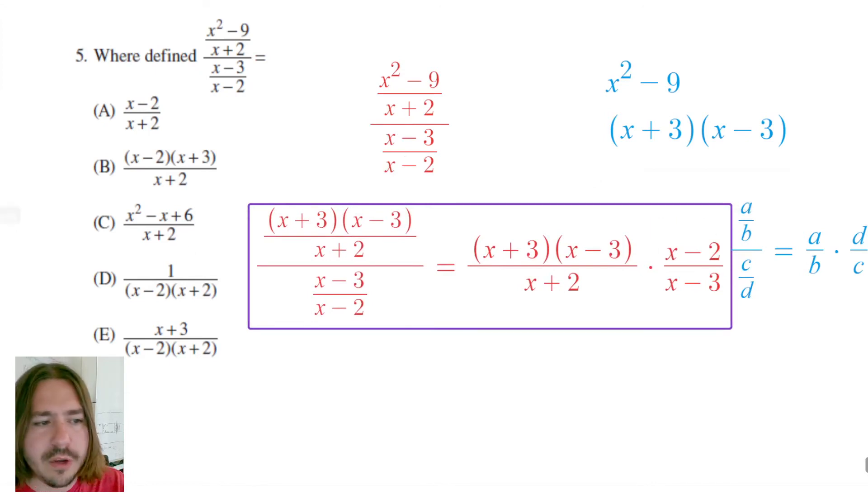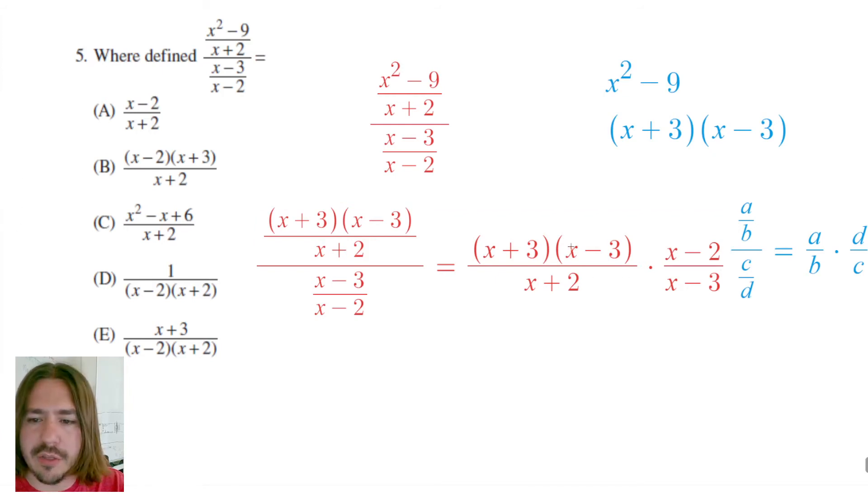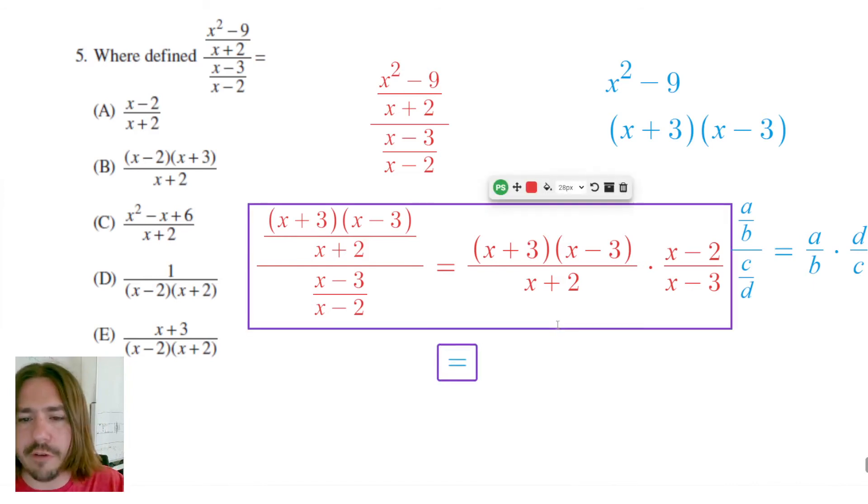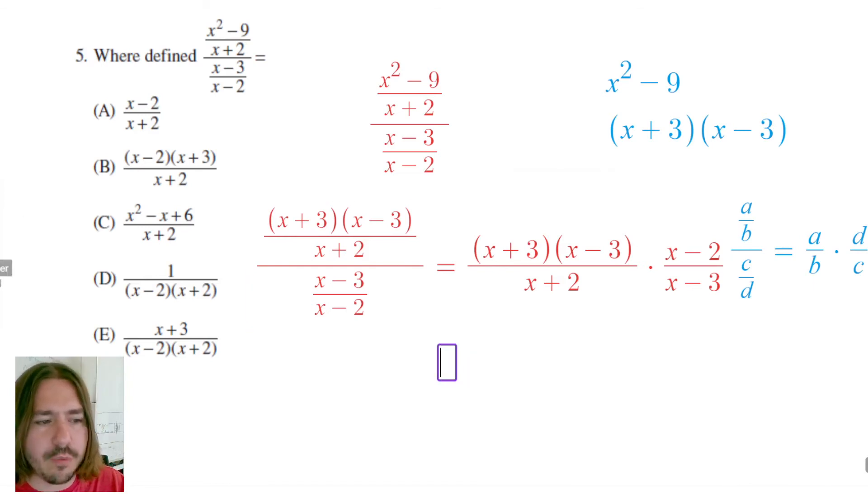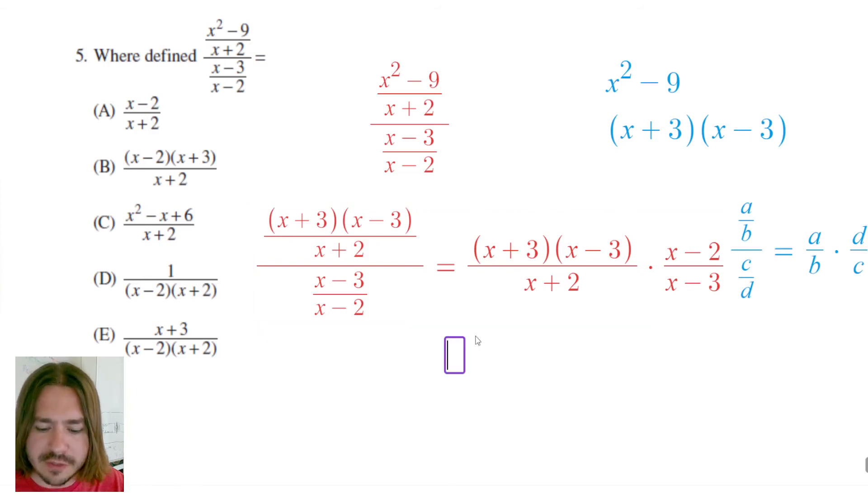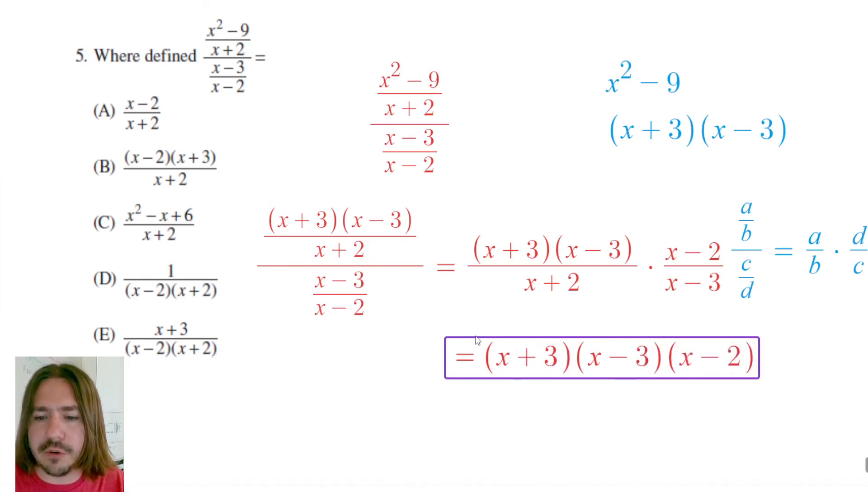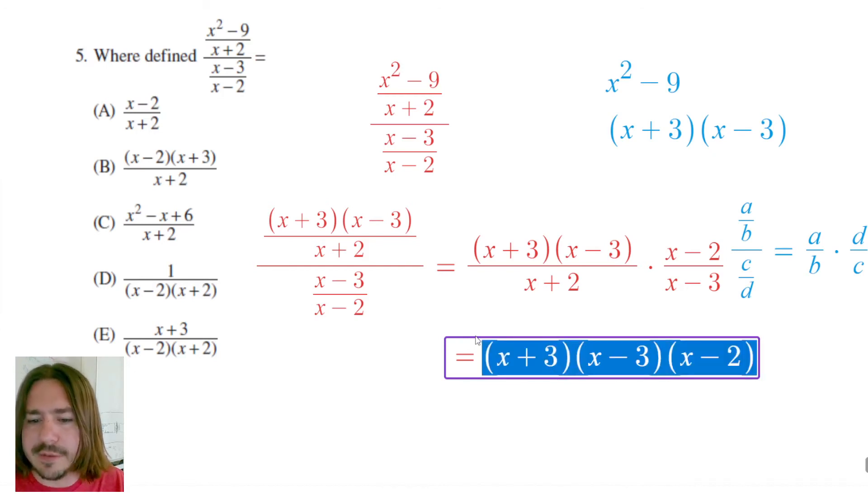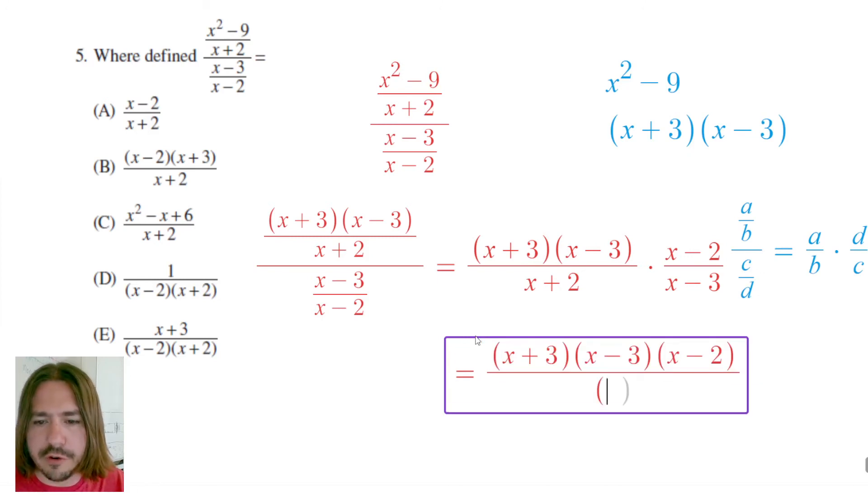Now you might notice that I have three binomials being multiplied in the numerator and two in the denominator. Let me go ahead and just collapse these into one fraction to make it more obvious what's going to happen here. When you multiply two fractions, you simply multiply the numerators and multiply the denominators. So I've got X plus 3 times X minus 3 times X minus 2 all over X plus 2 times X minus 3.